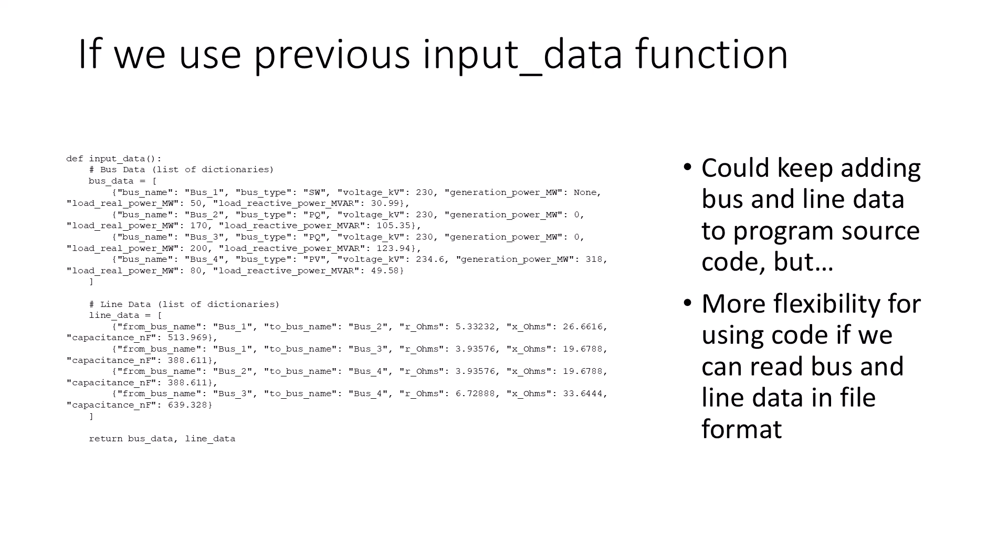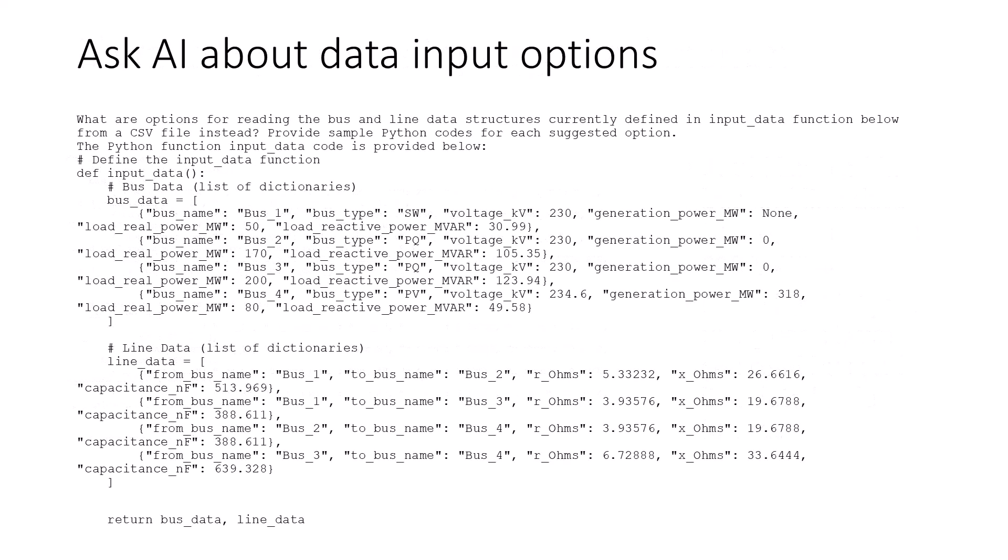Before we modify our original three-bus example code to model the PV bus, let's first revisit the input data function. In the original program, we simply set up fixed bus and line data structures consisting of Python lists. Each list entry stored data in Python dictionary format. The problem with this approach, though, is we have to modify the Power Flow Python source code in order to create a new case. Let's look at a more flexible way of handling the system data, where we read the bus and line data from a common text file.